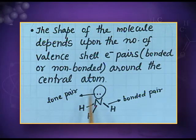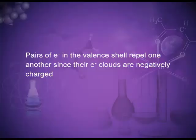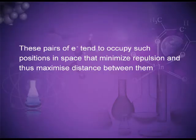The total number of electron pairs will decide the shape of the molecule, as we will study through different examples. The pairs of electrons in the valence shell repel one another since their electron clouds are negatively charged. These pairs of electrons tend to occupy positions in space that minimize repulsions and thus maximize the distance between them — that is, they adopt the most stable position with minimum repulsion and maximum distance.